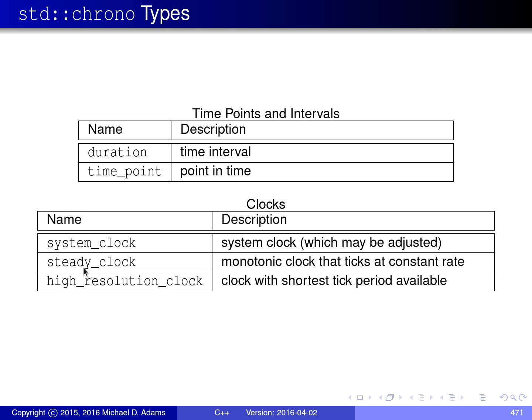You might say, well, wait a minute, shouldn't all clocks be monotonic? Well, not necessarily, because most operating systems, for example, allow you to change the time. If you change the time, you might change it in a backwards direction, which would cause the clock not to be monotonic. So not all clocks are necessarily guaranteed to be monotonic, but this one, steady_clock, is.